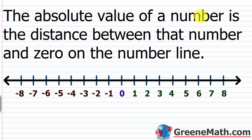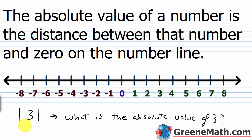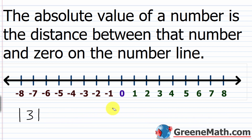The absolute value of a number is the distance between that number and zero on the number line. So if I ask what is the absolute value of three — written with vertical bars surrounding the number — following our definition, I find three on the number line and count how far away it is from zero: one, two, three units away. So the absolute value of three is just three.